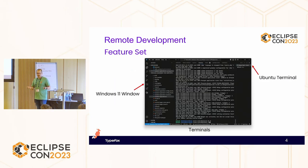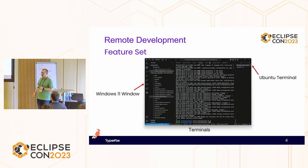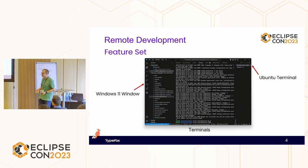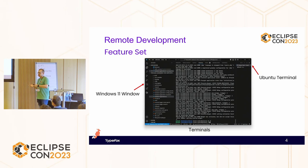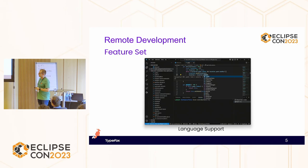Looking at a few features: first, we have terminals. I have a Windows 11 window here showing VS Code connected to a Gitpod machine in Google Cloud. Even though it's a Windows 11 window, it runs Ubuntu in a terminal. All Ubuntu commands are available — I'm logged in as user Gitpod in the workspace, and I'm able to just work on the Gitpod workspace even though it's running somewhere in the cloud, as if it were just local.